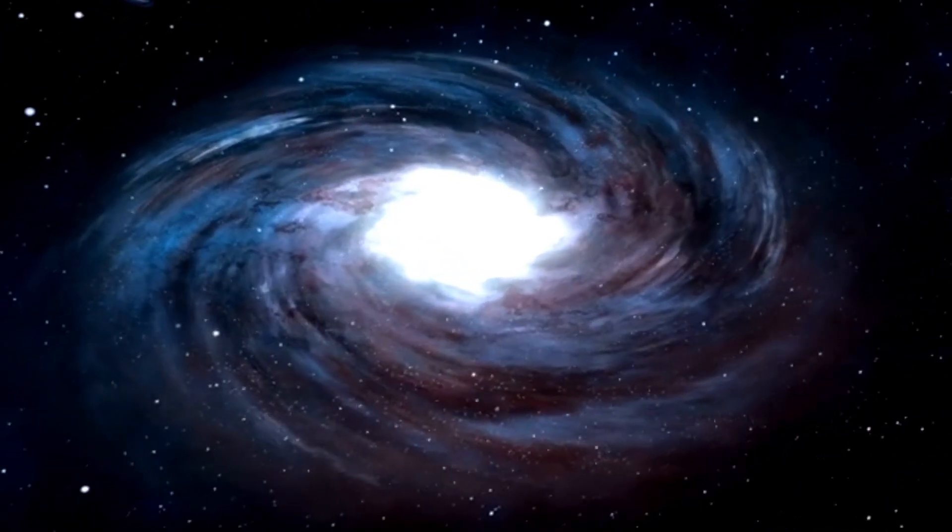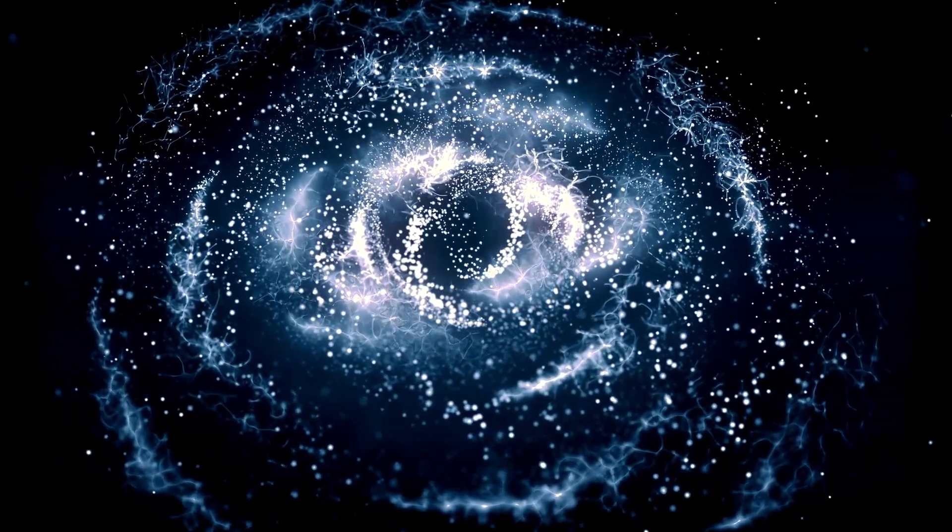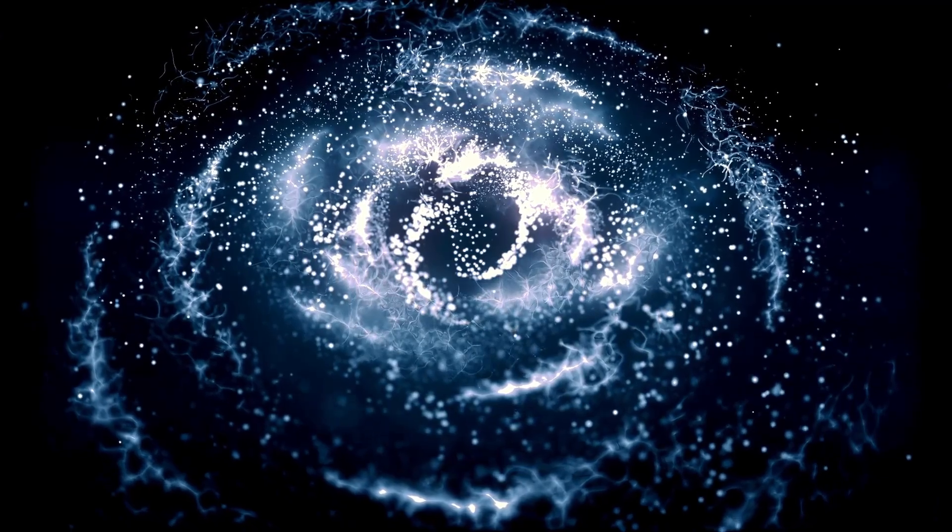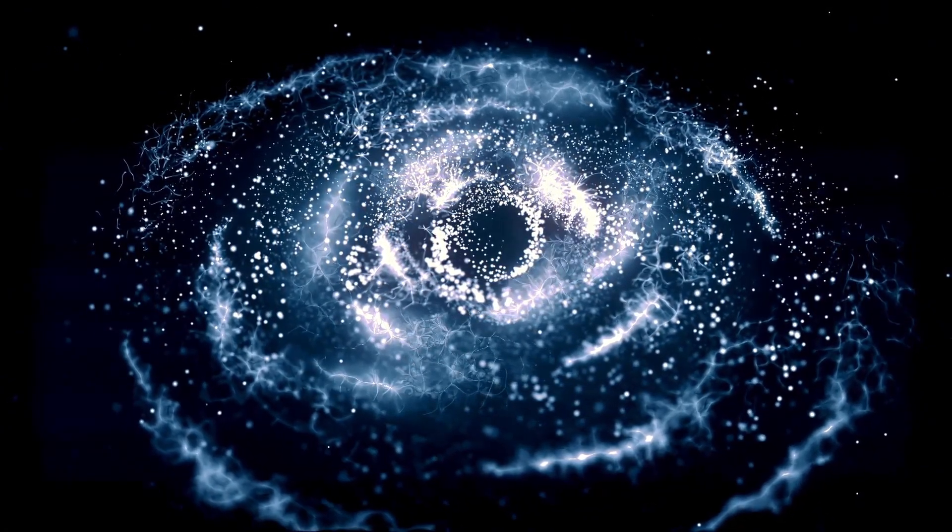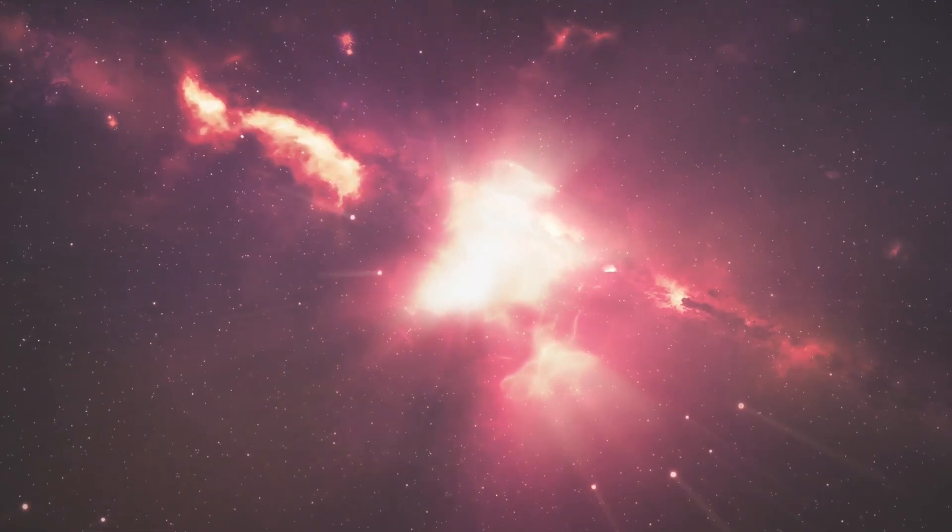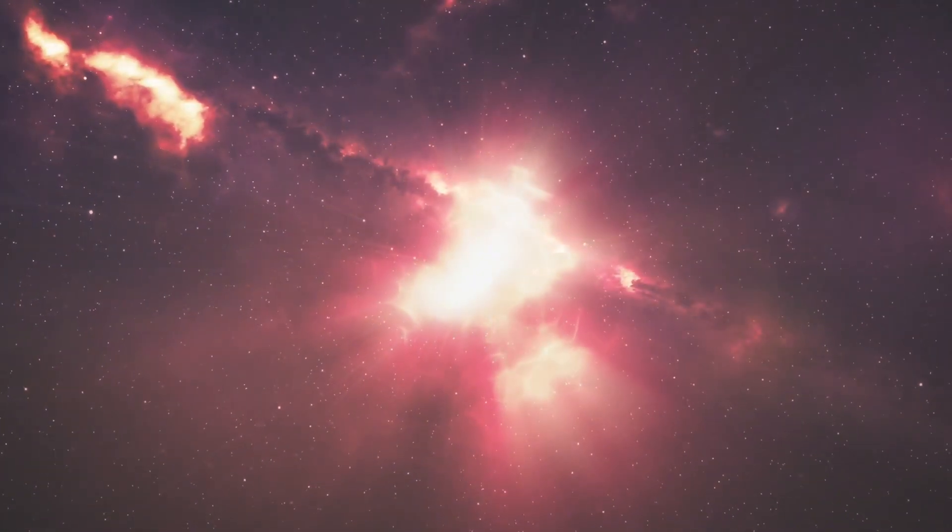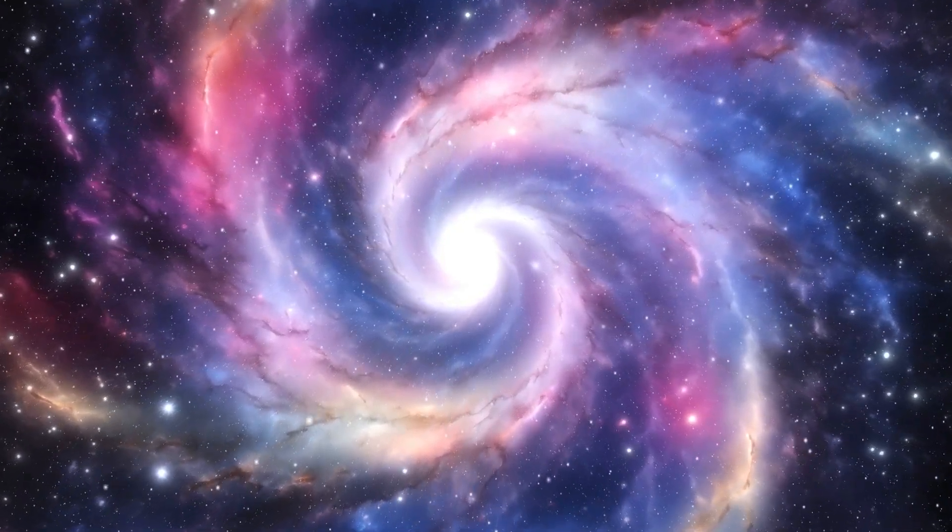Although our sun is much smaller than Betelgeuse, it will eventually evolve into a red giant in about 5 billion years, expanding to engulf the inner planets, including Earth. By studying Betelgeuse's impending explosion, astronomers can better understand what will happen when our sun reaches the end of its life. The scientific community is already preparing to monitor the star closely in the coming years, using advanced telescopes and other technologies to gather data.